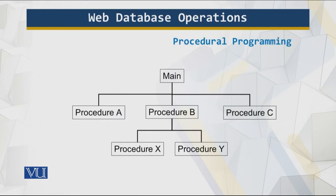In procedural programming, we have procedures, functions, and a main function that calls or generates other procedures, and those procedures have more functions. The program is divided into logical parts and works through those logical steps in a sequential manner. Results are generated, processed, and displayed on your screen. That is the procedural approach of solving the problem.